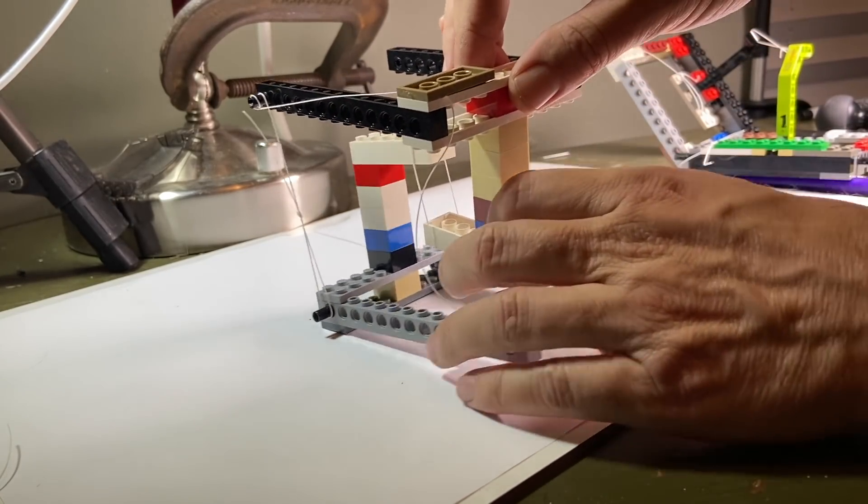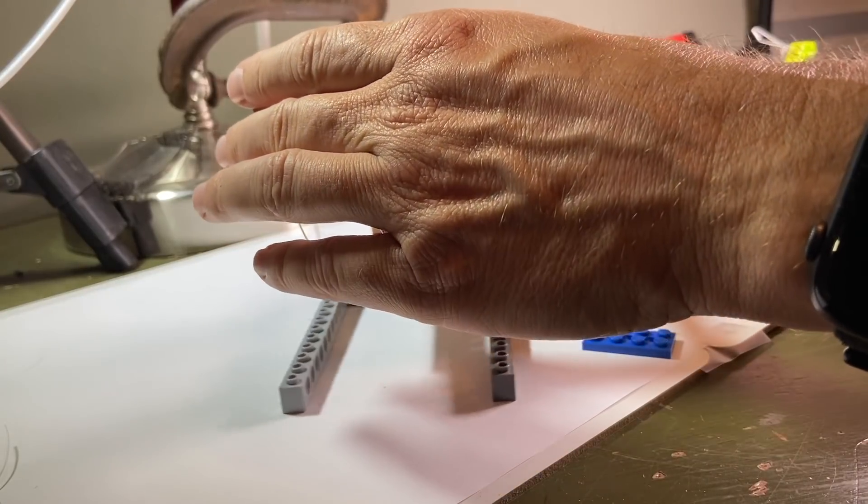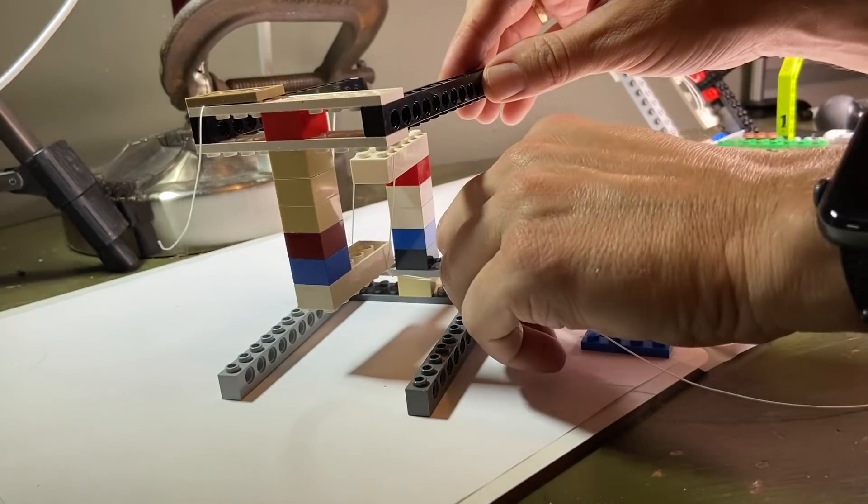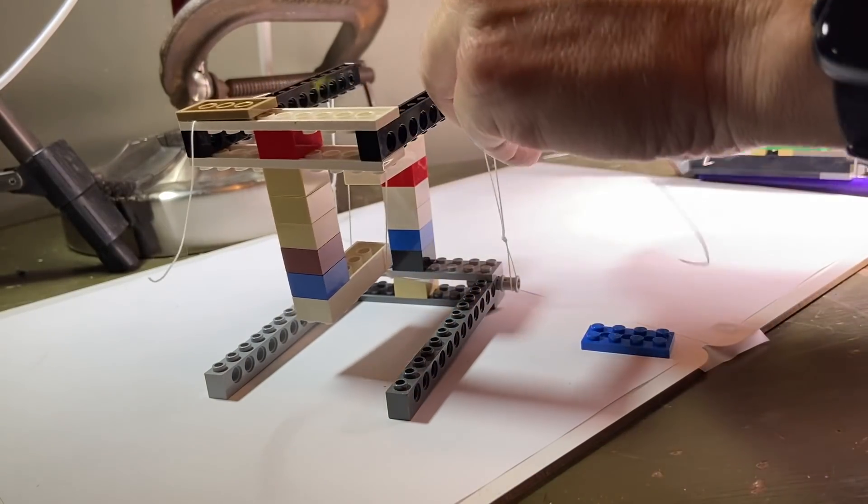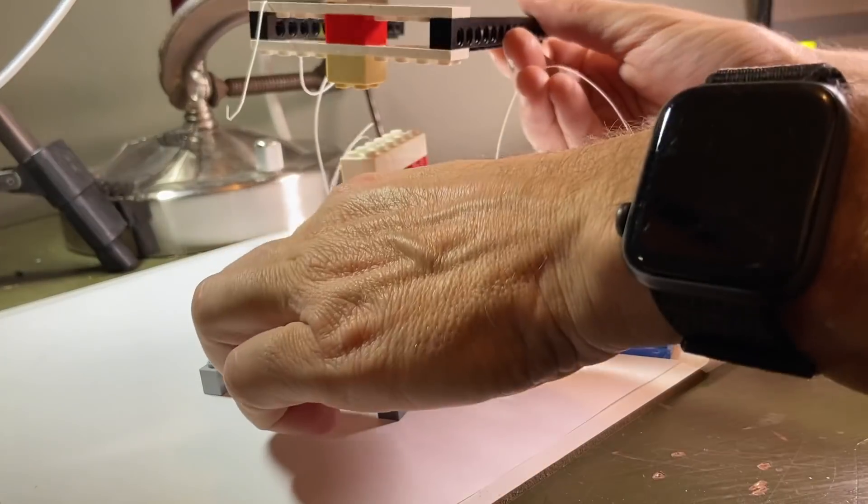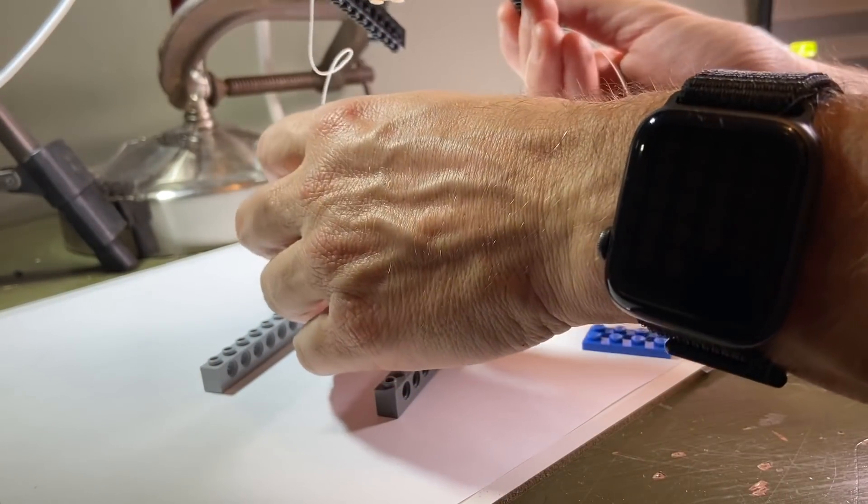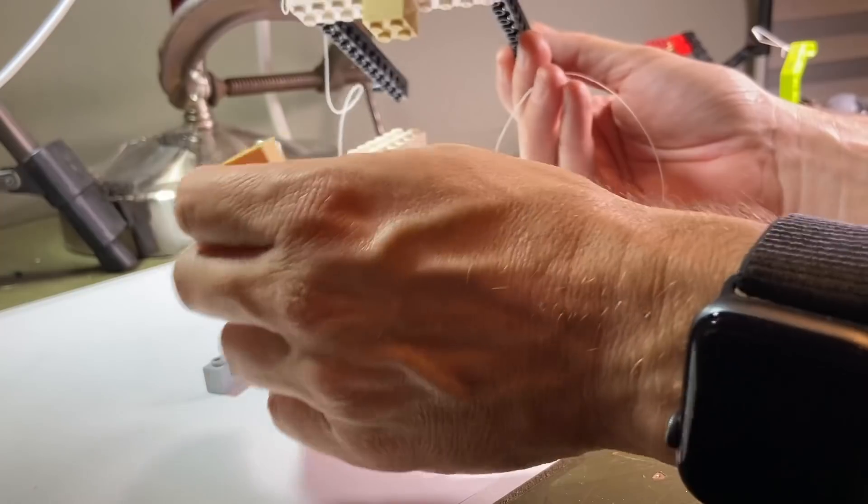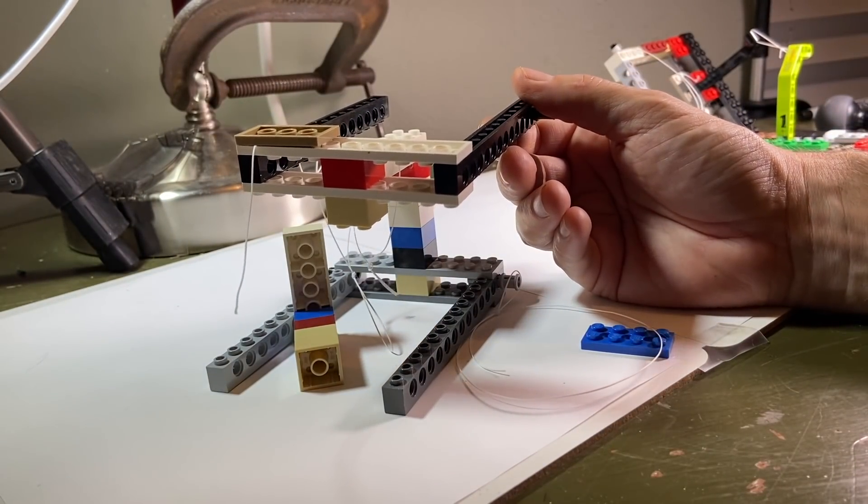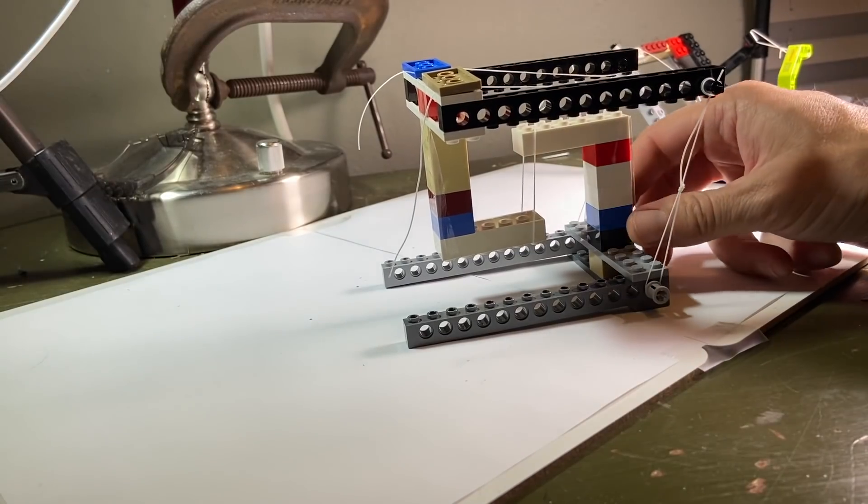I can come around to this side. I have a feeling it's going to fall, and I'm going to be upset. Loop over. See? Okay. I'm going to fix it, and then I'm going to show you. I did it. Okay.